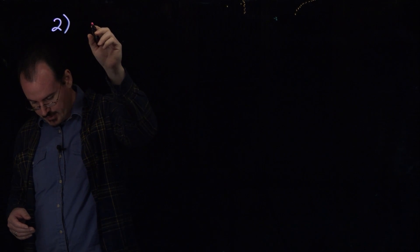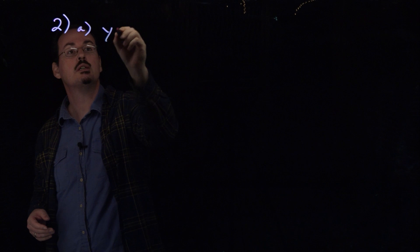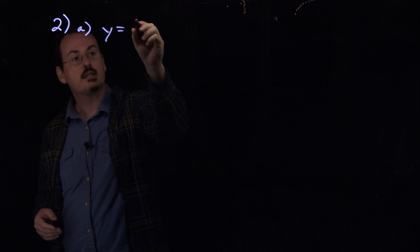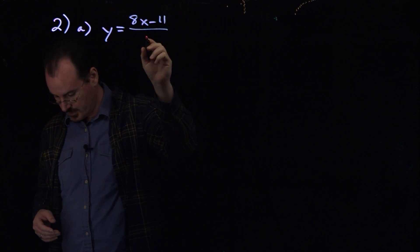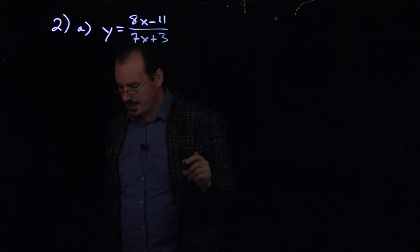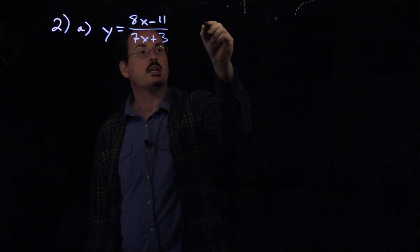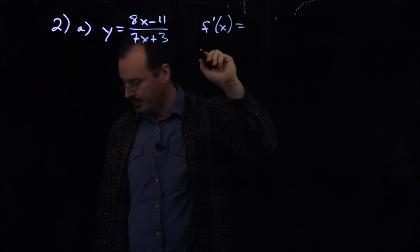So the quotient rule is a little bit more complicated than the product rule. Our function here for part a is y equals 8x minus 11 over 7x plus 3. So again, quotient rule is a little bit more complicated. Let me just go ahead and write it up here so we have it as a guide for us.